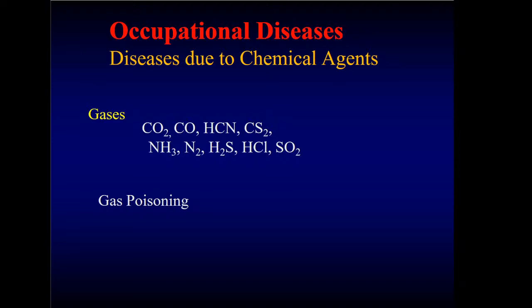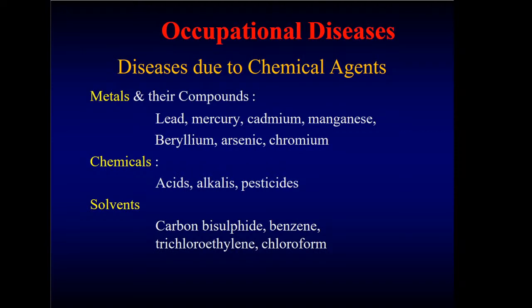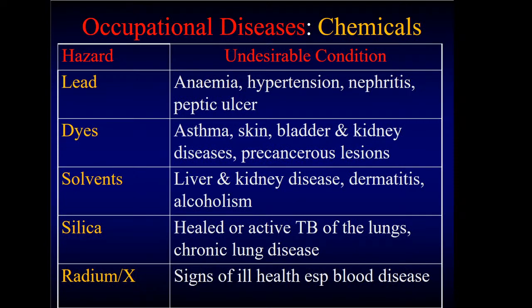Chemical agents include gases such as carbon dioxide, carbon monoxide, ammonia, nitrogen, hydrogen sulfide — any gas can cause gas poisoning. Metals like mercury, cadmium, manganese, beryllium, arsenic, and chromium cause various problems. Chemicals such as acids, alkalis, pesticides, and solvents like carbon disulfide, benzene, trichloroethylene, and chloroform are all hazards. Lead can cause anemia, hypertension, nephritis, and peptic cancer. Dyes can result in asthma, skin, bladder, and kidney diseases, and precancerous conditions. Solvents can cause liver and kidney damage, dermatitis, and alcoholism. Silica can aggravate tuberculosis lesions and cause chronic lung disease. Radium or X-rays can cause blood diseases.